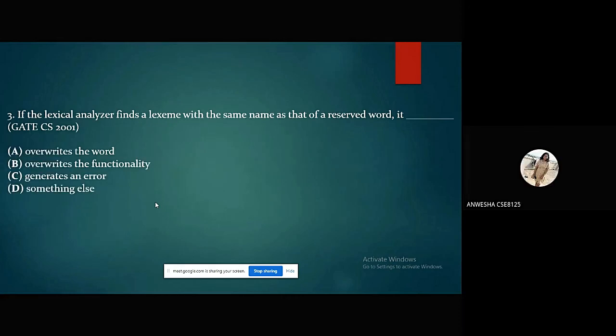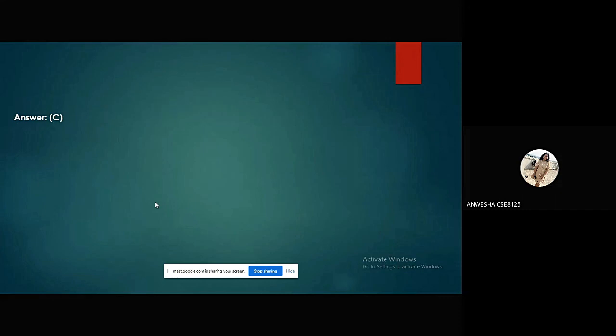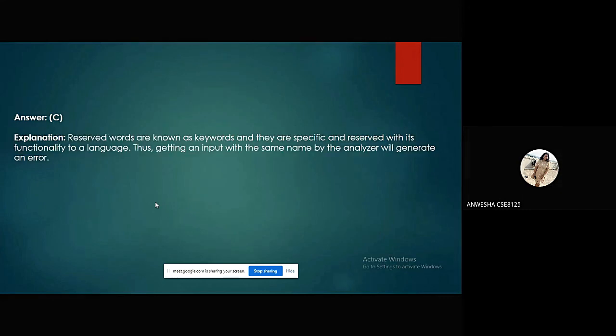Here we have the third question. If the lexical analyzer finds a lexeme with the same name as that of a reserved word, it (fill in the blank). This question was asked in GATE 2001. The options are: option A, overrides the word; option B, overrides the functionality; option C, generates an error; and option D, something else. The answer is option C, that is, it gives an error. The explanation being: reserved words are known as keywords, and they are specific and reserved with its functionality to a language. Thus, getting an input with the same name by the analyzer will generate an error.